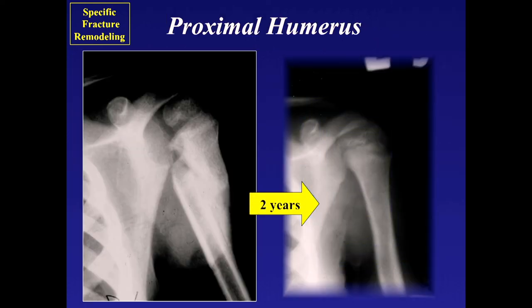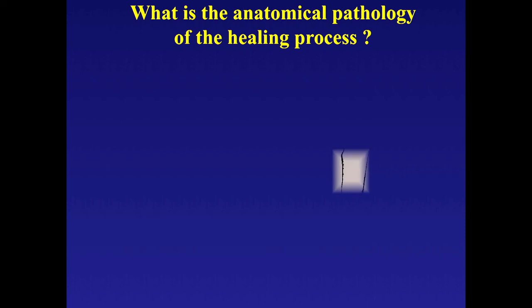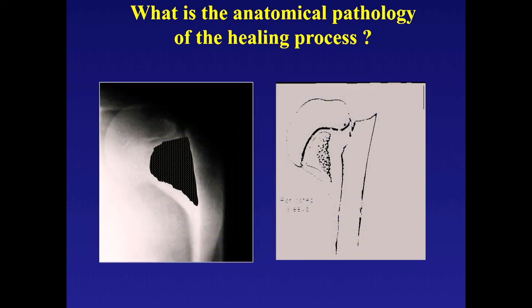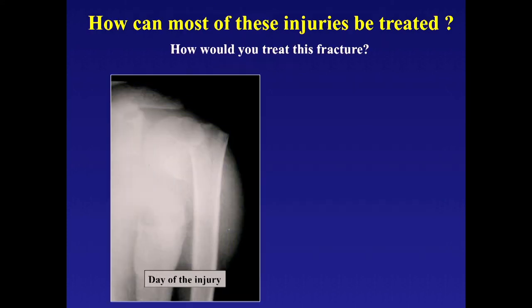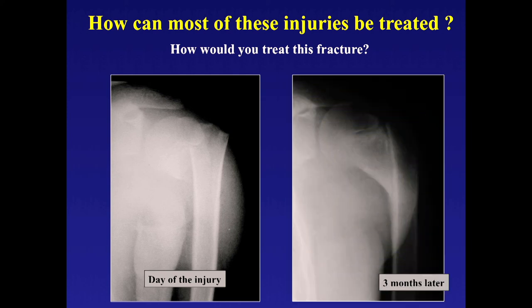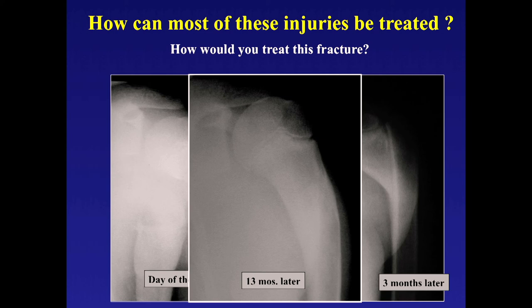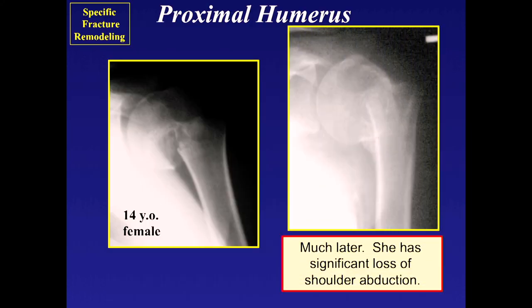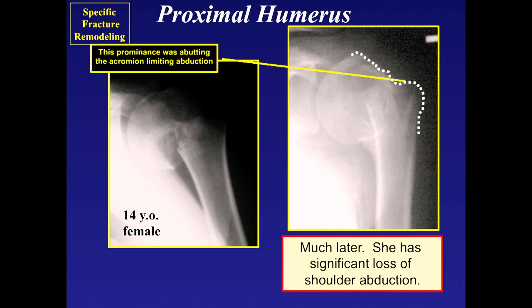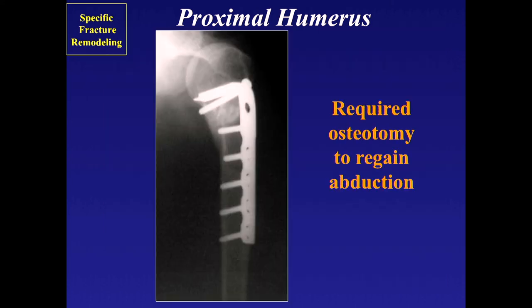Remember: translocation will remodel, but angulation has only limited remodeling. Periosteum guides new bone formation. If a patient doesn't have much growth remaining, a 14-year-old who was almost skeletally mature ended up with a prominence and required surgery to correct it—she didn't remodel. So age and growth remaining are critical factors.